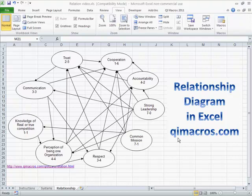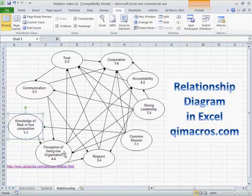And it can be a form of cause and effect kind of a diagram. So you literally start out with one thing, and knowledge of real or true competition, and then how that leads us to a perception of being one organization, which leads to respect and having a common mission, strong leadership, accountability, cooperation, trust, and whatever.